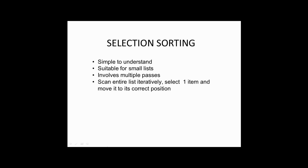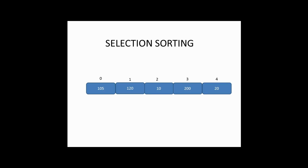Now let us understand this concept in more detail with an example. Here you can see that we have taken an unordered list with five elements in it, starting from the zero index to the fourth index. In selection sorting, first it locates the smallest element in the list, which is 10. You can see here at index position 2 we have 10, which is the smallest element in the list.